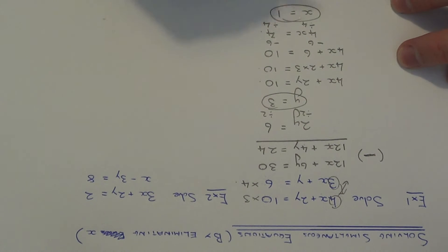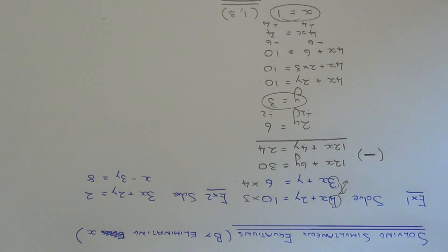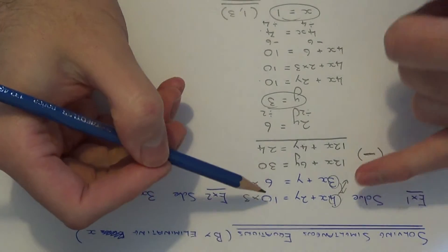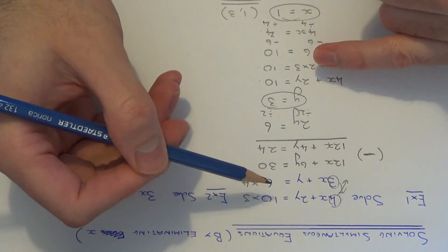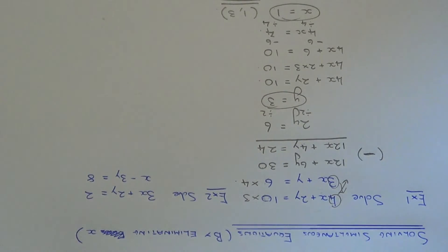So as you can see now, we have our final answer. So x equals 1, y equals 3. And you could write this final answer down as a coordinate. Because this is the point where, if you had to draw these two equations on a graph, the solution is where the two lines intersect.